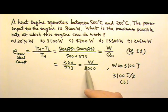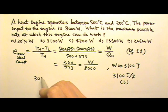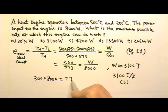we can cross multiply and solve for W. So when we cross multiply, we get 300 times 8,000 equals 773 times W. Now this is almost 800.